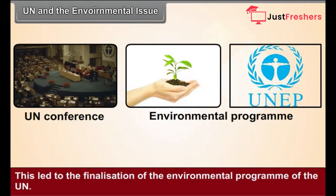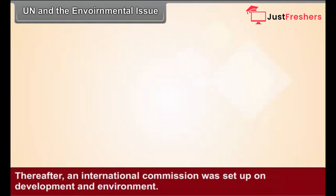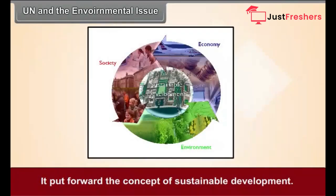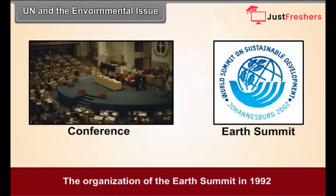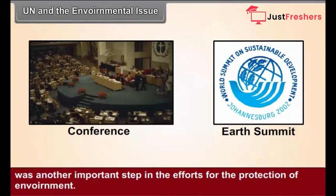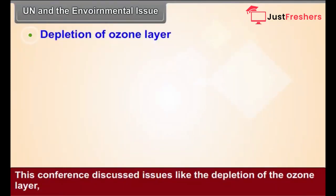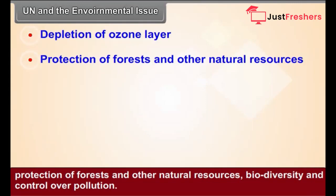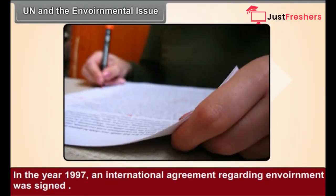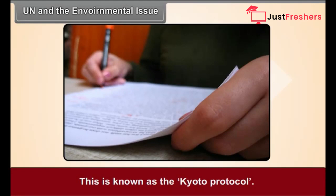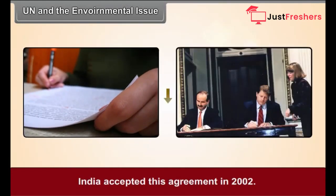Thereafter, an international commission was set up on development and environment. It put forward the concept of sustainable development. The organization of the Earth Summit in 1992 was another important step in the efforts for the protection of the environment. This conference discussed issues like the depletion of the ozone layer, protection of forests and other natural resources, biodiversity and control over pollution. In the year 1997, an international agreement regarding environment was signed, known as the Kyoto Protocol. India accepted this agreement in 2002.